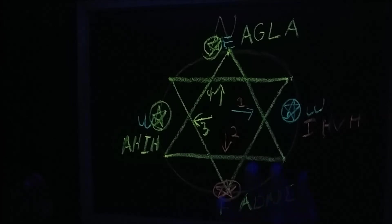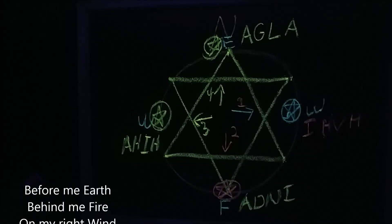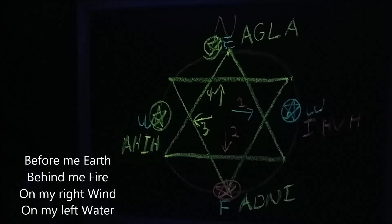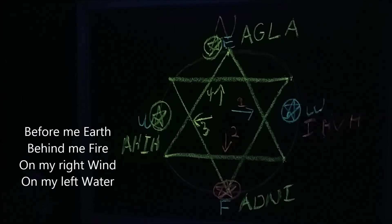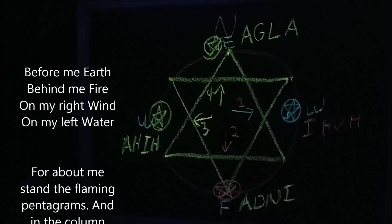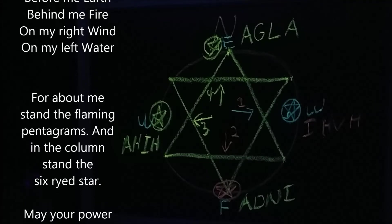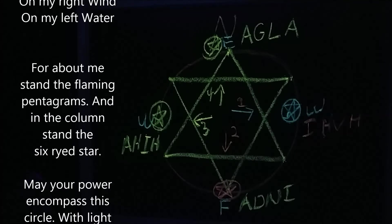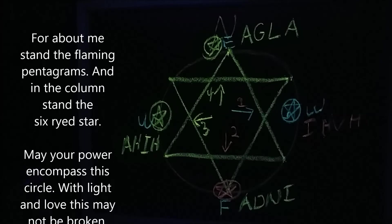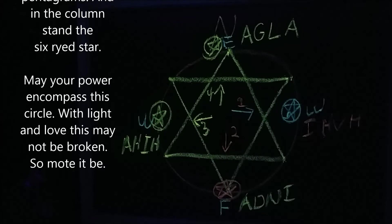All right so, and then after you do that you want to say, before me earth, behind me fire, on my right is wind and on my left water. For about me flames the pentagrams and in the column stands the six right star.